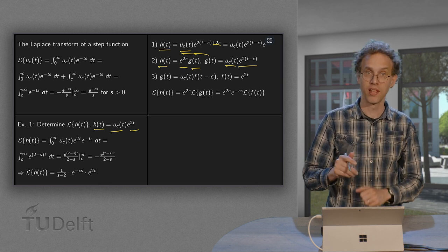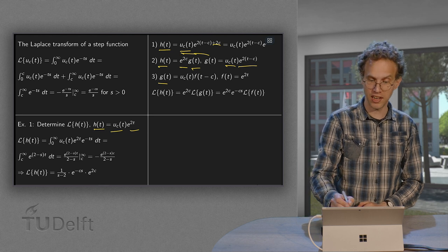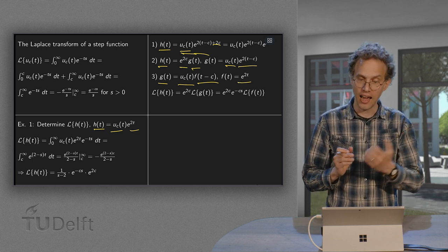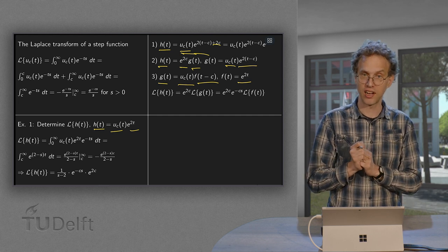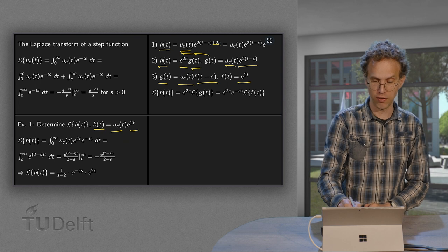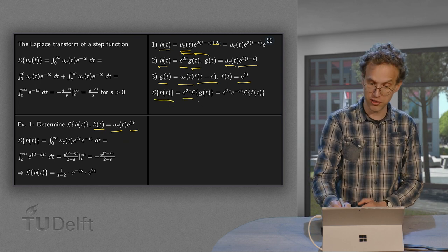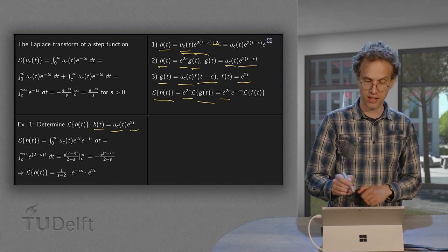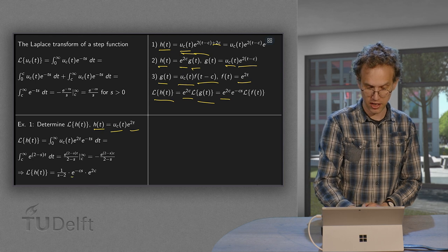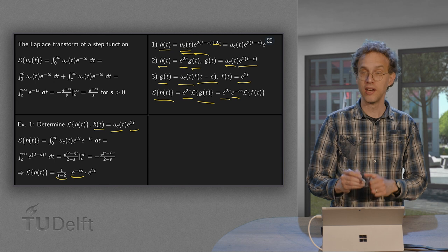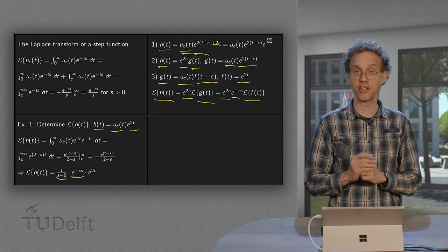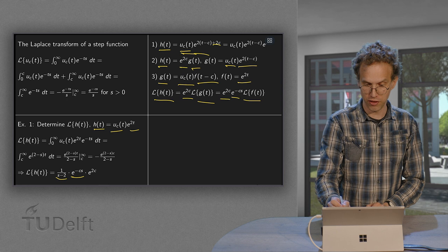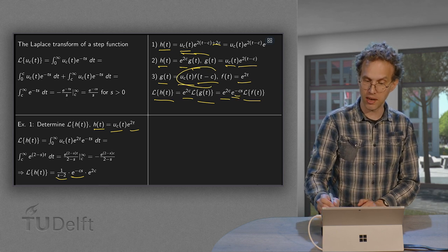We see that g(t) is a step function times a shifted function f, where f(t) = e^{2t}. When we can rewrite g in this form, the Laplace transform of h — which is e^{2c} times the Laplace transform of g — gives us e^{2c} times e^{-cs} times 1 over (s minus 2). And that 1 over (s minus 2) is exactly the Laplace transform of f. So the Laplace transform of g equals e^{-cs} times F(s).